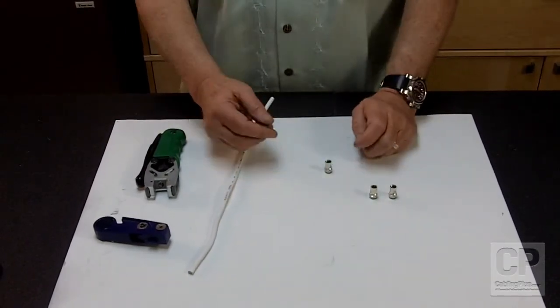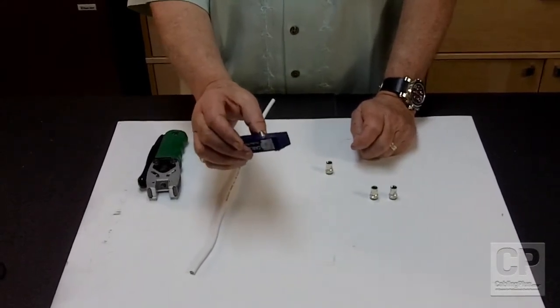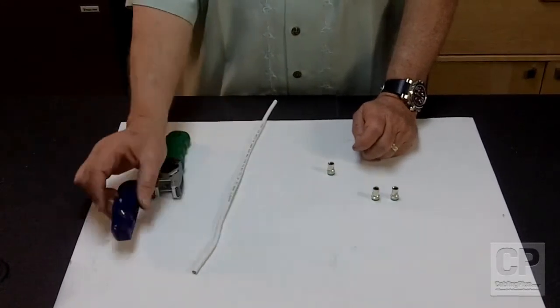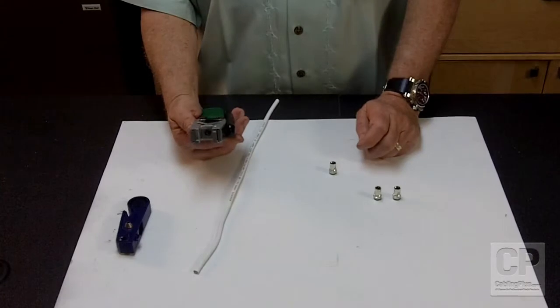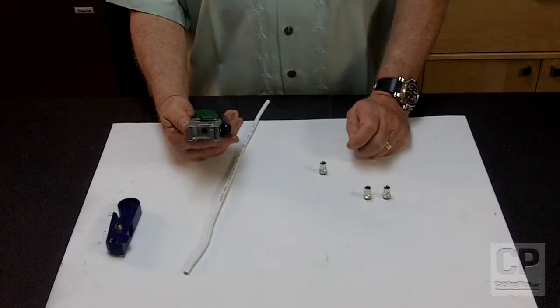The next thing you have to do is you have to have a good stripper. The stripper has to be able to cut the center conductor to a quarter inch length and expose a quarter inch of the braid. And then of course you need the tool. This is the only tool that allows you to install a DB compression connector. It is our CPLCRB-C.